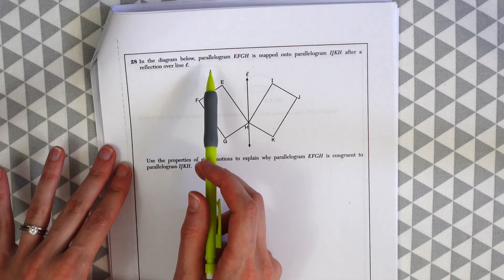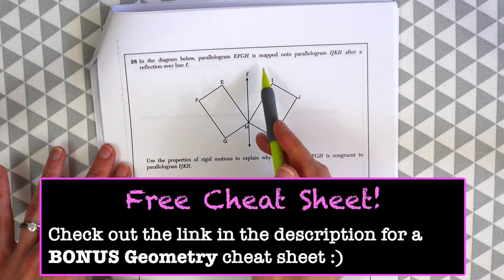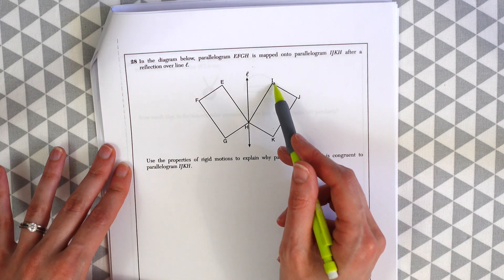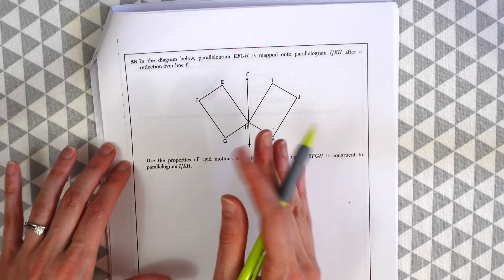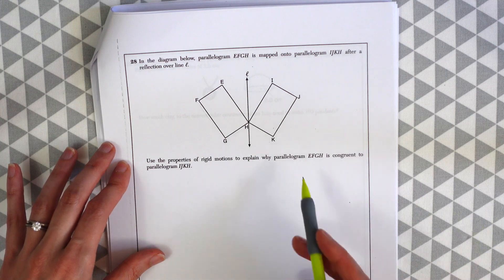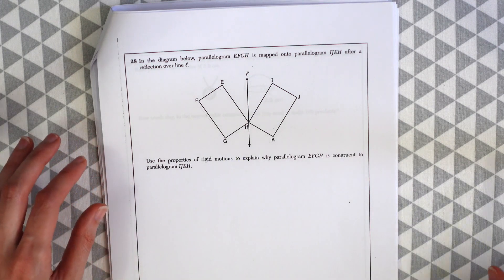In the diagram below, parallelogram EFGH, so this one on the left here, is mapped onto parallelogram IJKH, this other one, so this is a reflection over the line L.